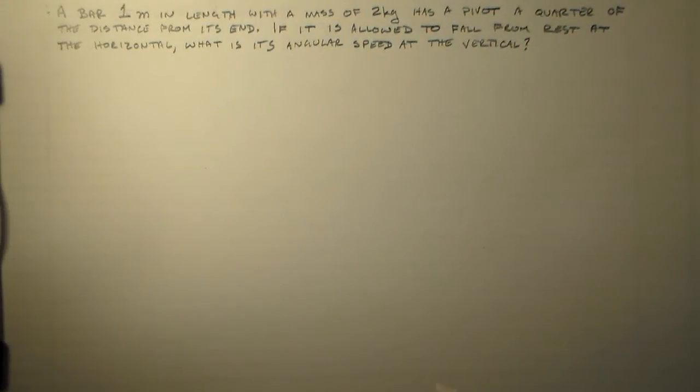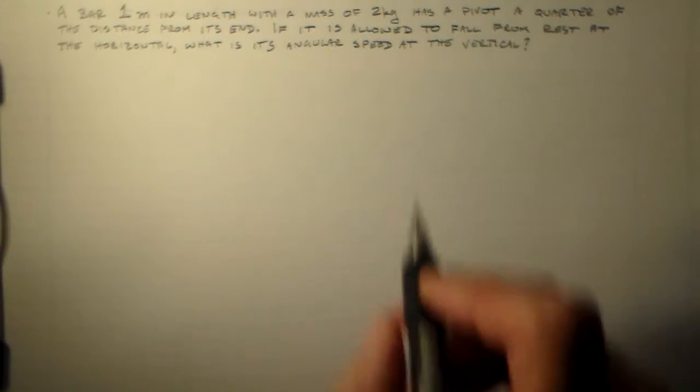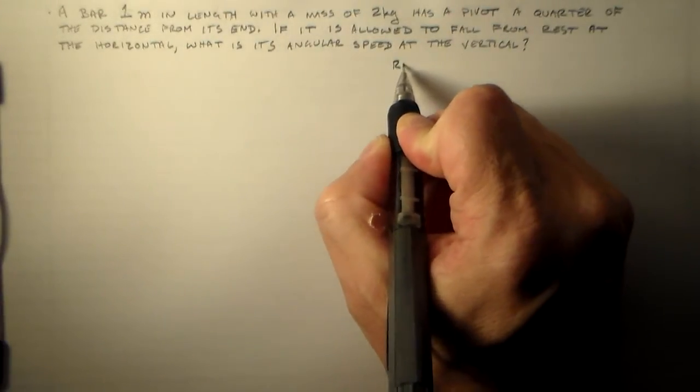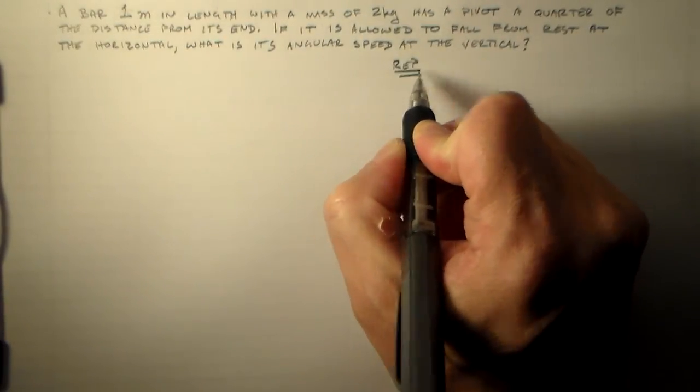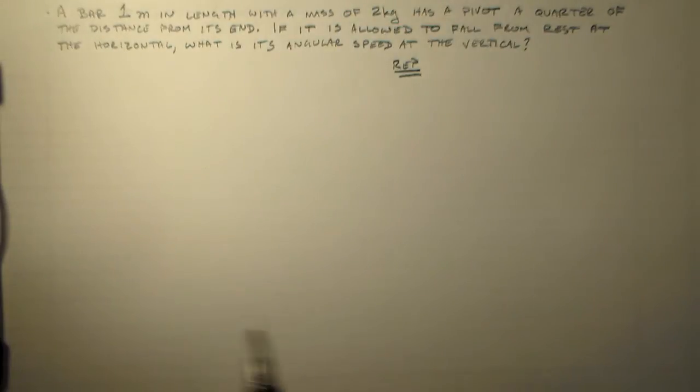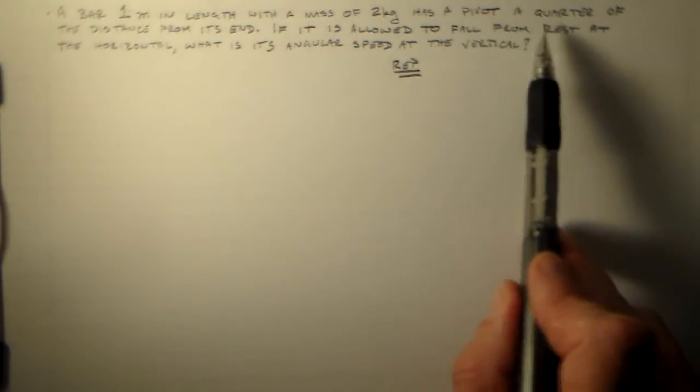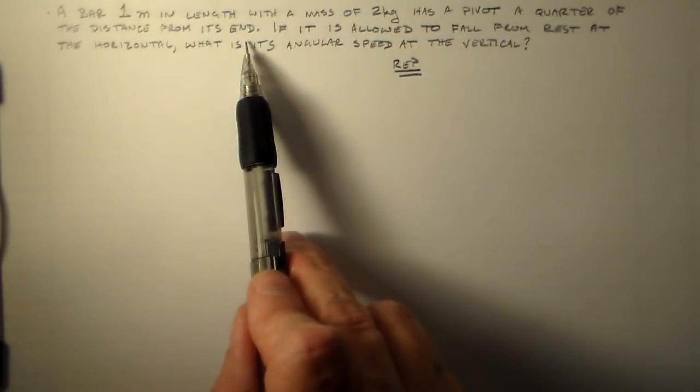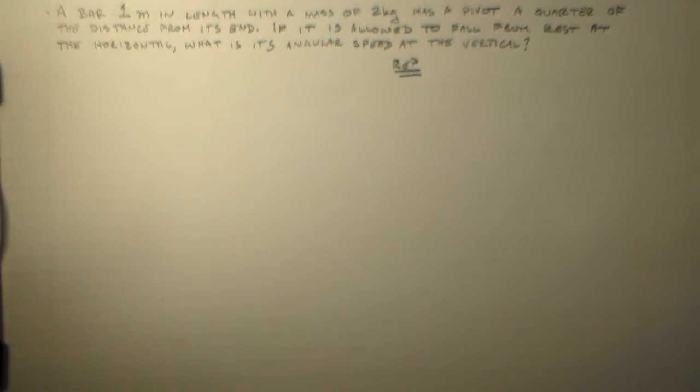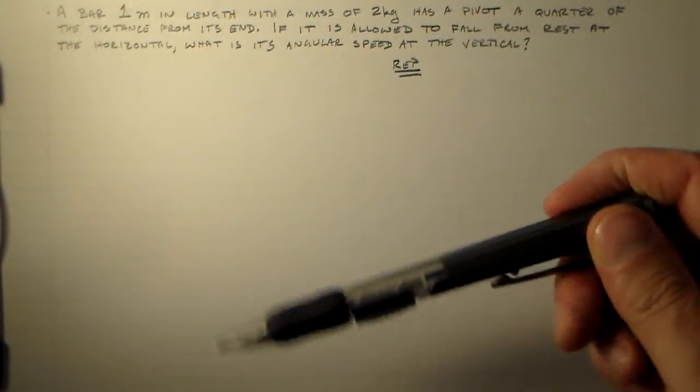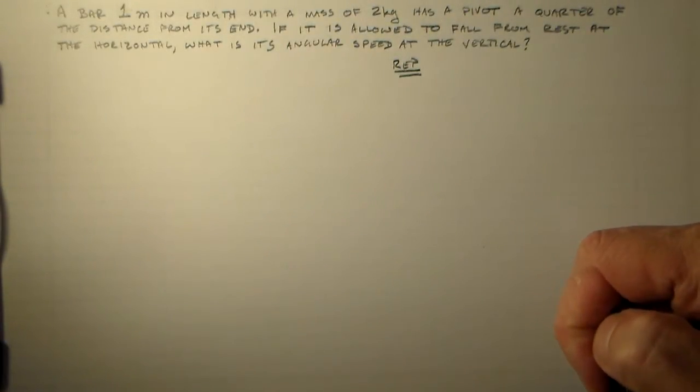I'd like to look at a simple problem. I'm going to have a bar, so let's draw this out. I've got a bar that's one meter in length with a mass of two kilograms. There's a pivot a quarter of the distance from its end. I'm going to start it in a horizontal position and let it fall down to the vertical position, and find out what its angular speed is when it reaches that vertical position.